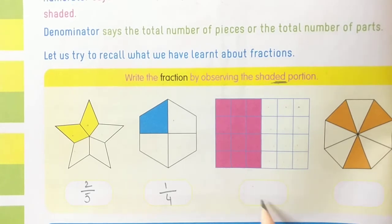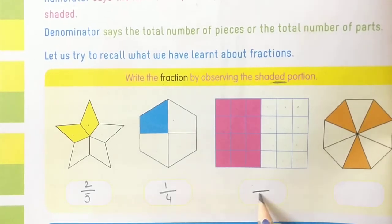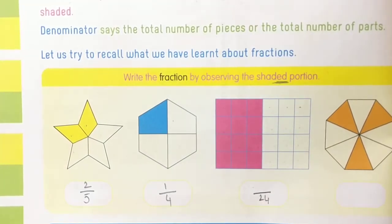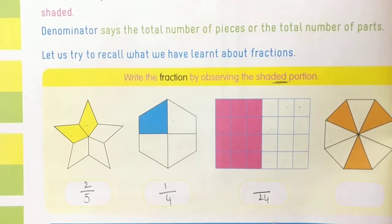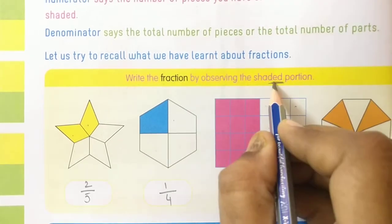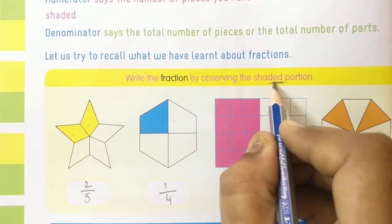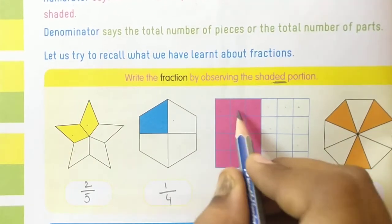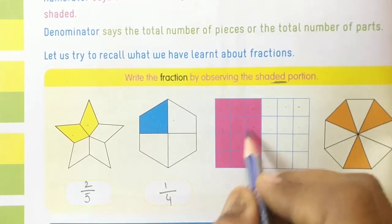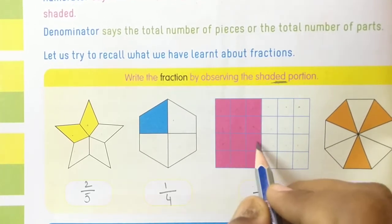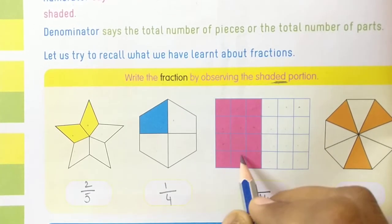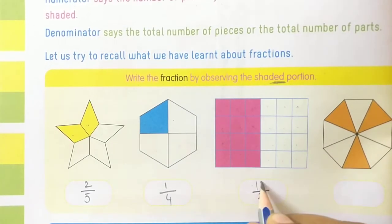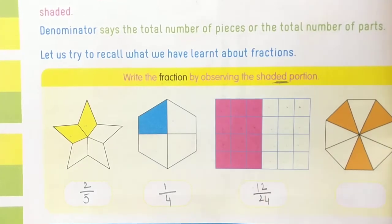Total you have 24 parts. How many parts are shaded? Here they have given a shaded portion — one, two, three, four, five, six, seven, eight, nine, ten, eleven, twelve — so 12 are shaded. The answer is 12 by 24.